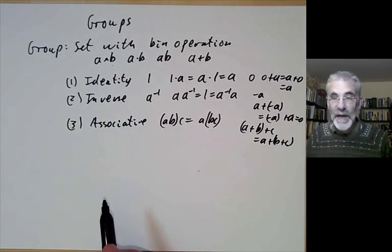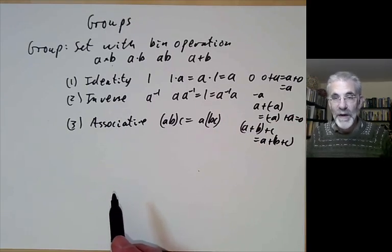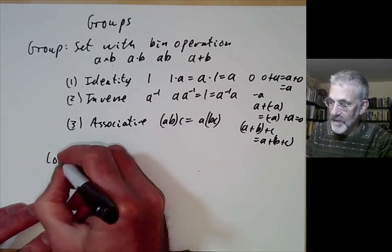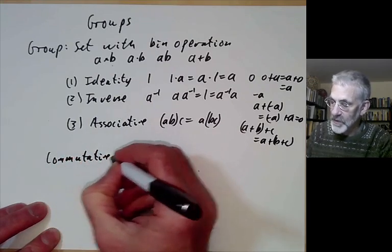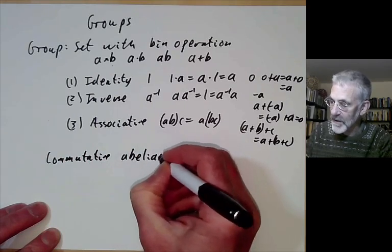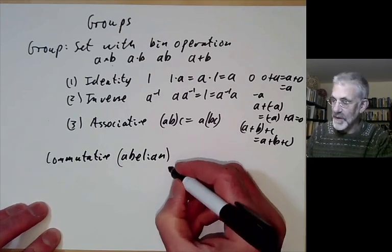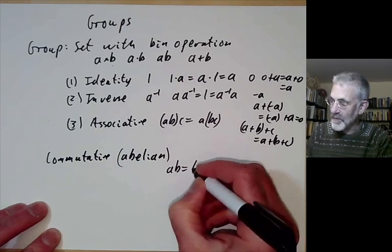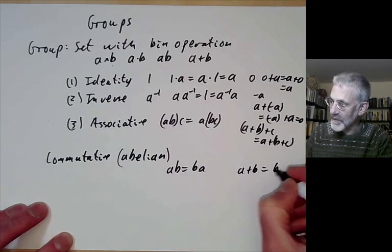In at least elementary number theory, almost all the groups we look at have an additional property, which is that they're commutative — or sometimes called abelian, named after the mathematician Abel. This just says that you can change the order of the multiplication: ab equals ba, or a plus b equals b plus a.